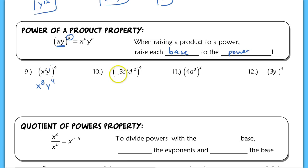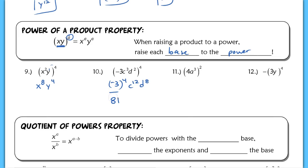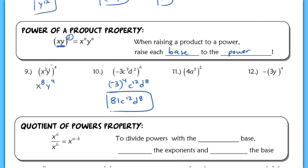In number ten, you have three different bases, so you need to distribute three different times. A lot of times people forget about distributing to the negative three. So this is negative three to the fourth power, then C to the three times four — twelfth power — and D to the eighth power. I would evaluate negative three to the fourth power as a positive 81, because a negative raised to an even is positive, then evaluate three to the fourth. There are certain powers you should have memorized so you're quicker and more efficient.